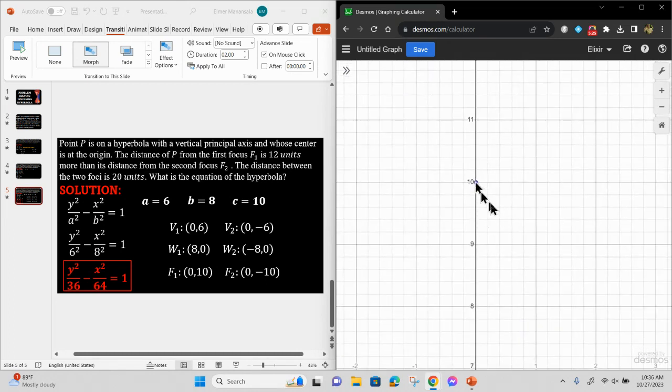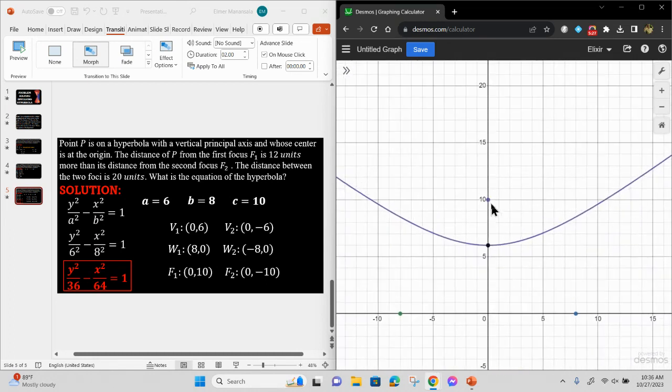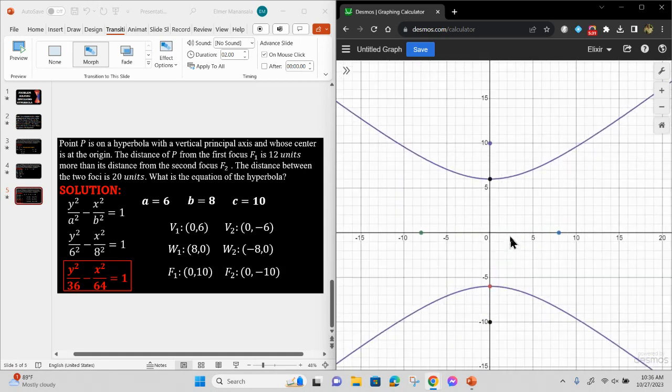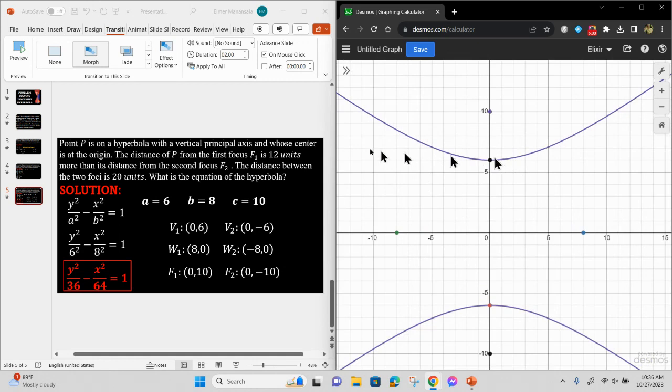...and 20. Ibig sabihin, tama itong equation natin. Hindi ko na dinoving dito yung fundamental rectangle, kasi masyadong matagal yun, and also the asymptotes. And that is for this video. I hope you learned something. Thank you very much for watching.